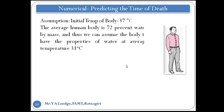As we know, the average human body is 72 to 75 percent water by mass. Thus we can assume the body to have the properties of water at an average temperature of 31 degree Celsius. We consider the properties of water because the body is 72 percent water.